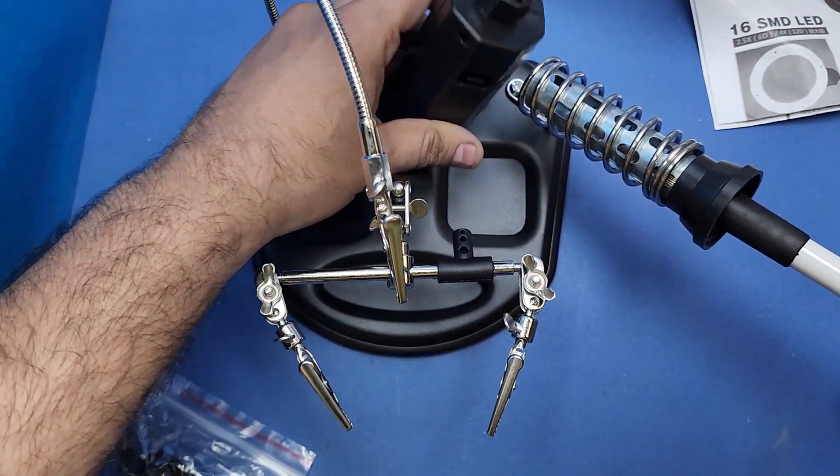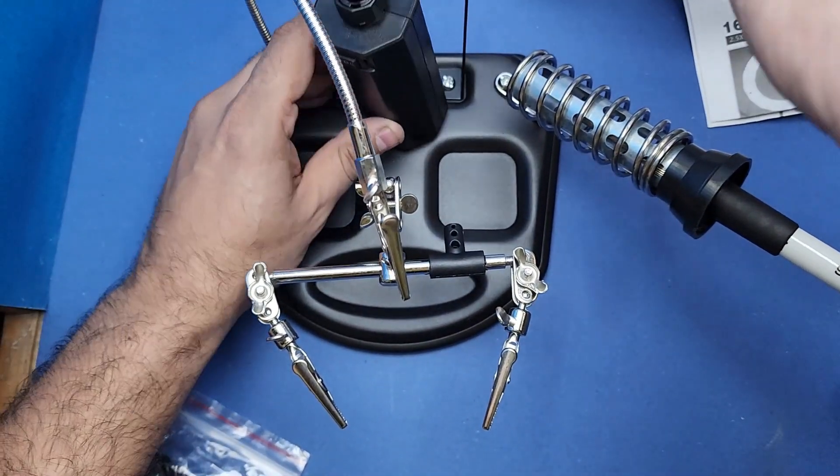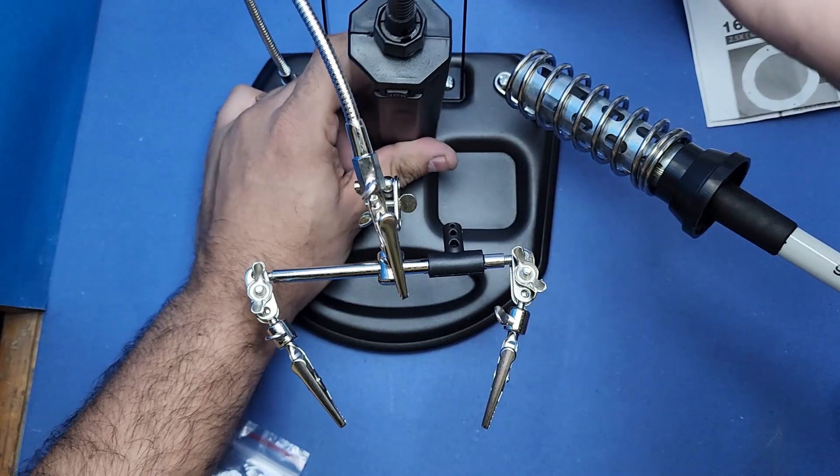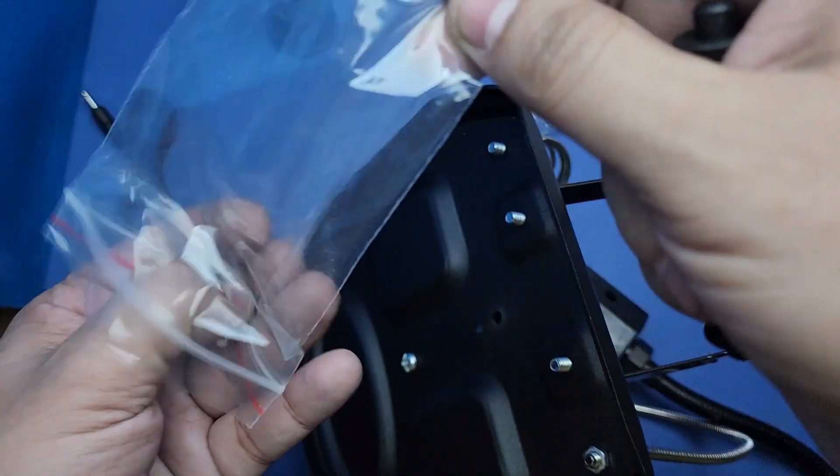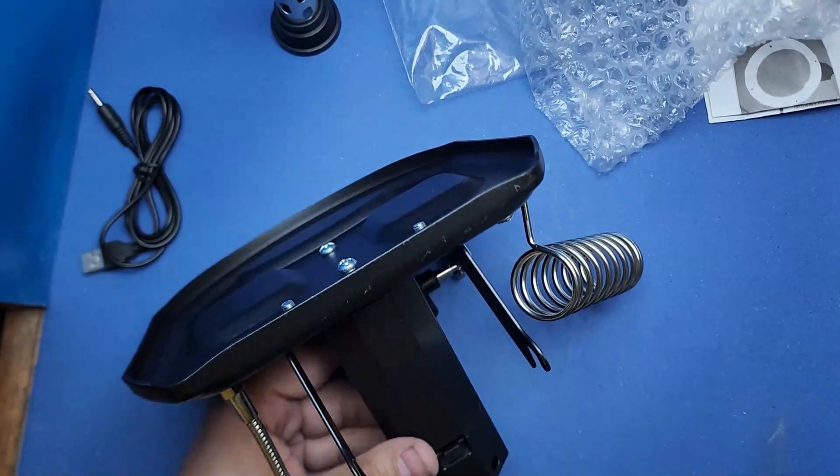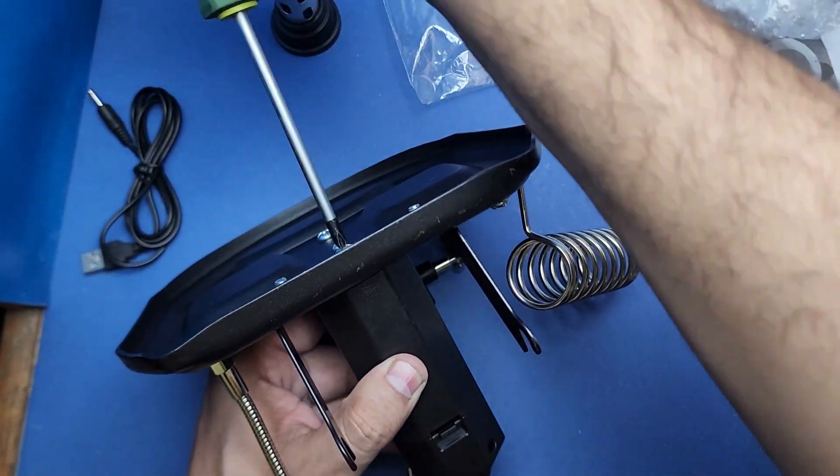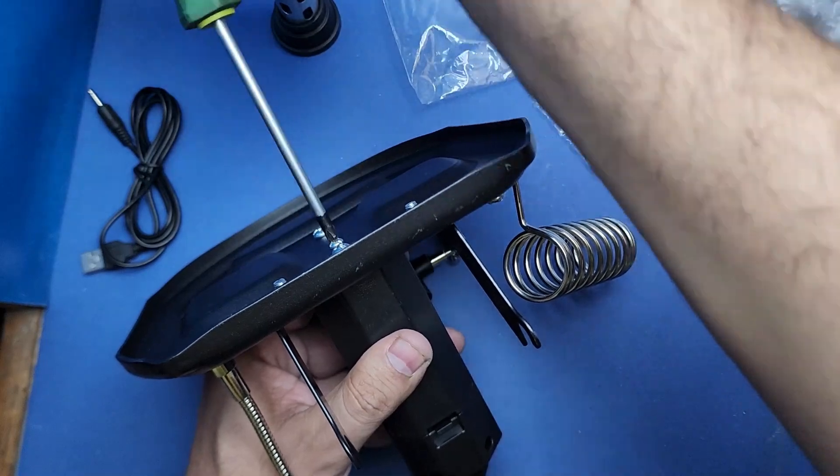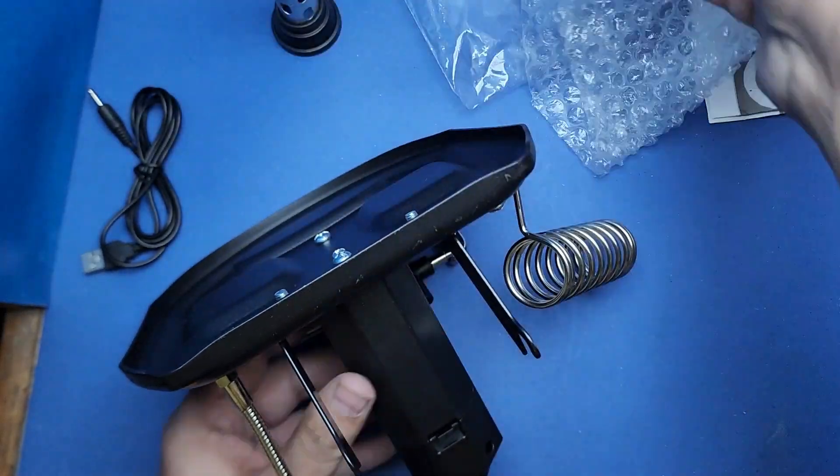Now it is time to attach the lamp base to the soldering stand. You can find two screws inside a plastic packaging along with the USB cable to power the LED lamp. Use these two screws to attach the lamp base to the stand.